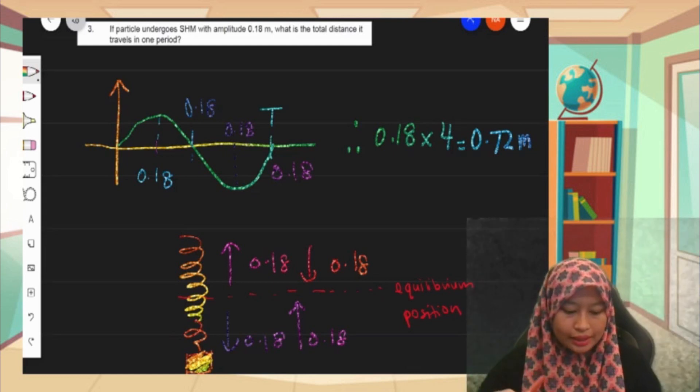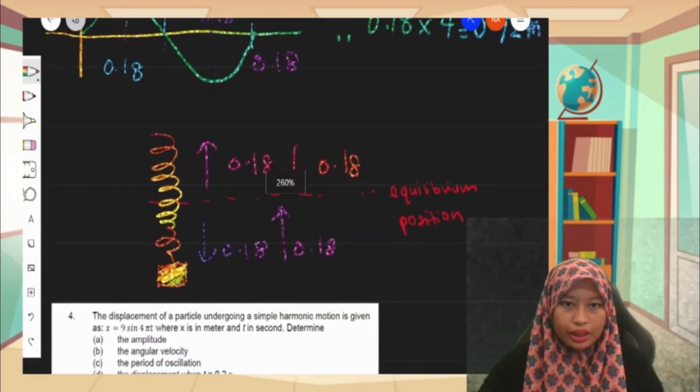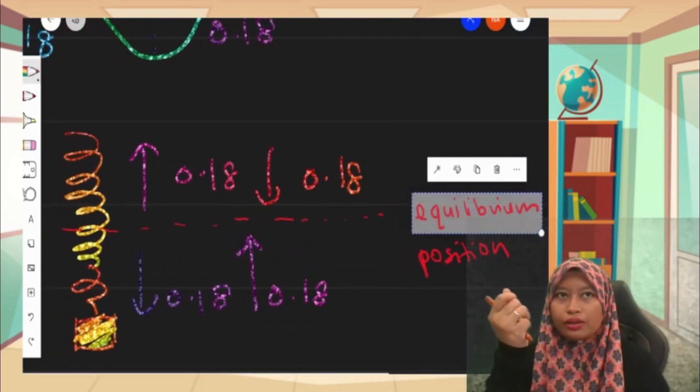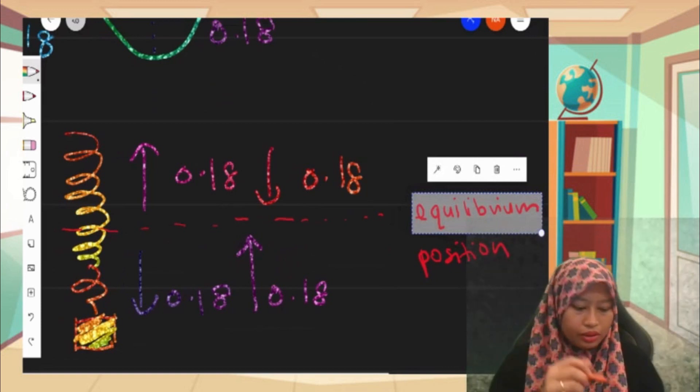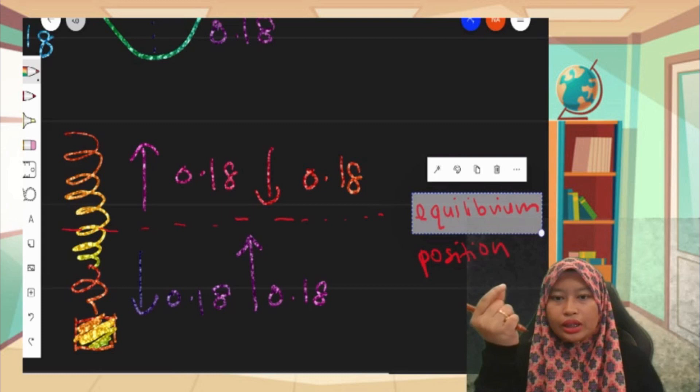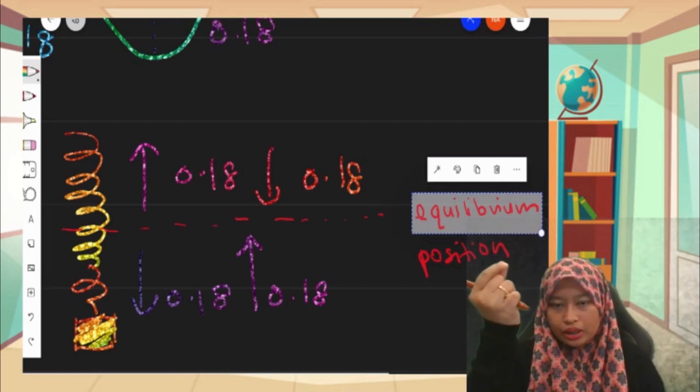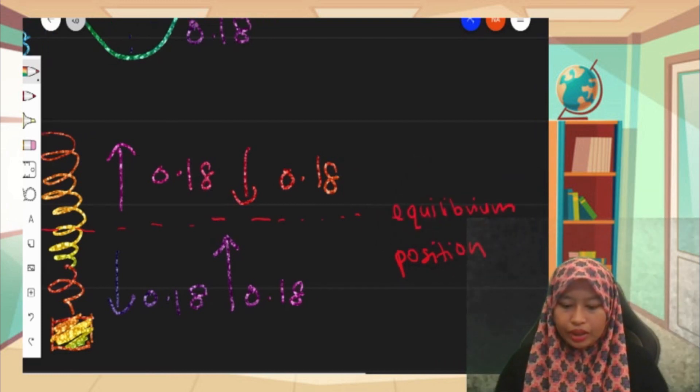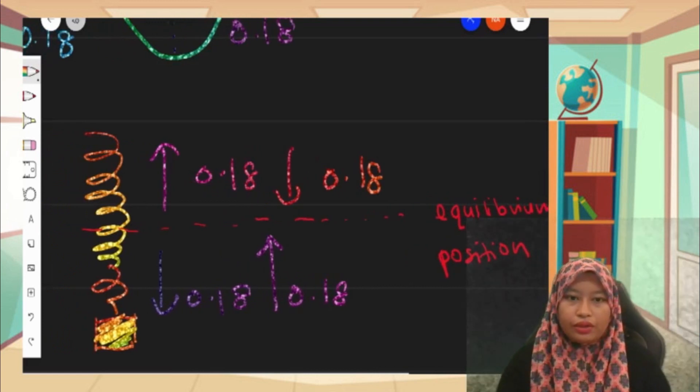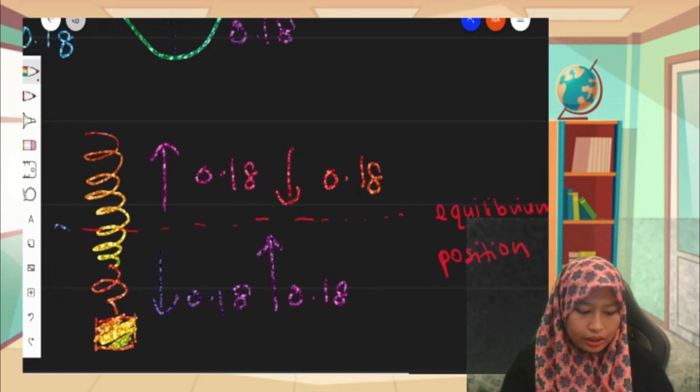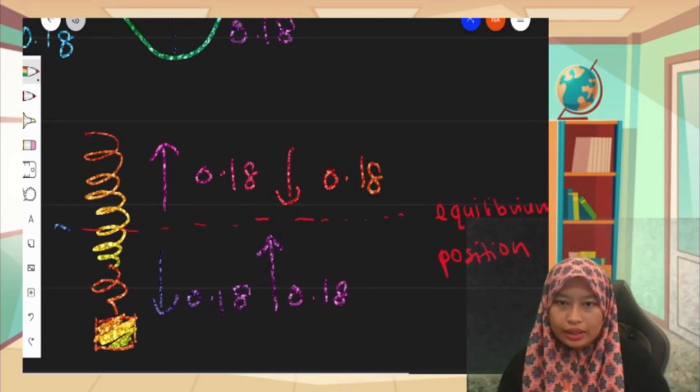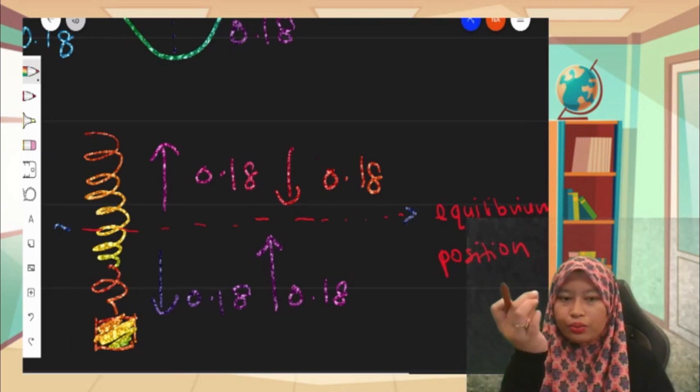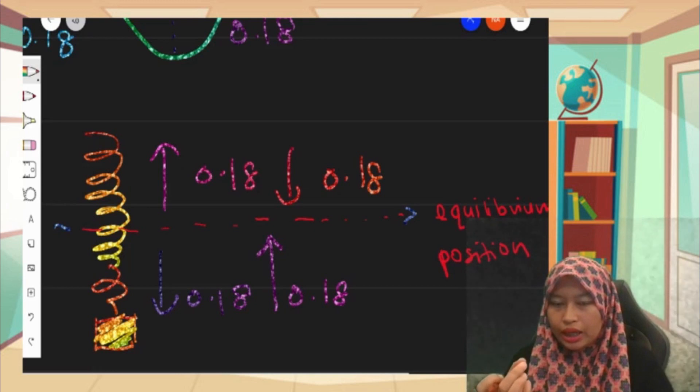To answer this question, you need to imagine we have one spring with a mass. So here I have a spring with a mass here. So just imagine this mass is moving downward and upward, downward and upward, like that. So imagine that this is the equilibrium position. So if it's not moving, the red line here is the equilibrium position.